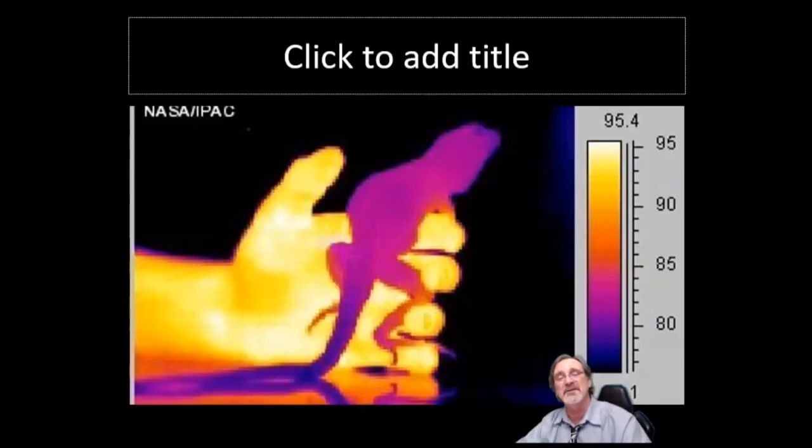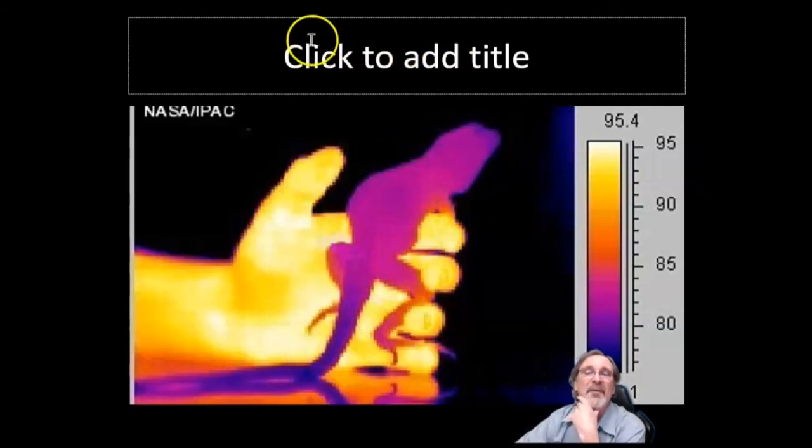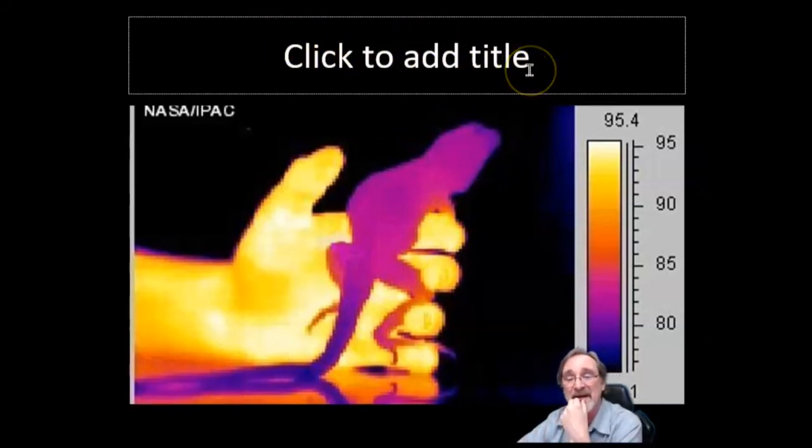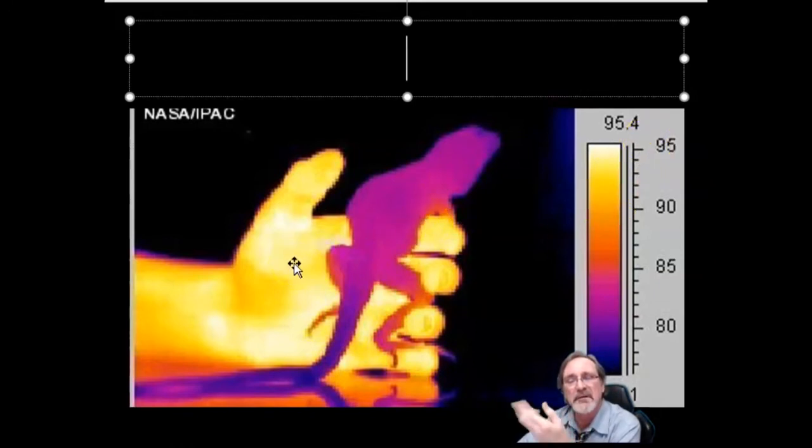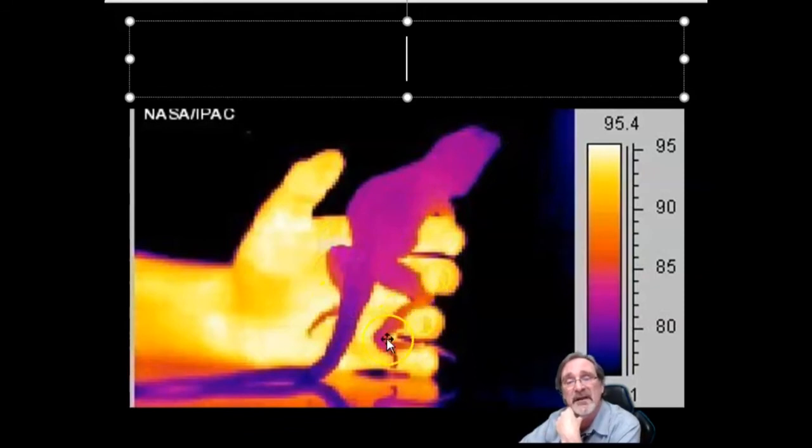All right, here's another picture of a hand holding a lizard. The lizard looks purple, and the hand looks yellow. Why would that be? Usually somebody can answer this. Because the lizards are cold-blooded, right? They don't generate their own heat. And look though, it's red where it absorbs the heat from the hand. It's warming up on its feet.